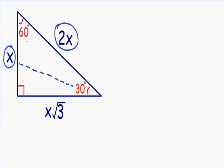Now let's take a look at the side that's opposite of 60 degrees. We know that if the length of the shortest side has a length of x, then the length of this side opposite 60 degrees is going to be x multiplied by the square root of 3. So this is true for all 30-60-90 triangles — the length of the sides are proportional to each other, and we can use this information to solve these special right triangles quite easily.